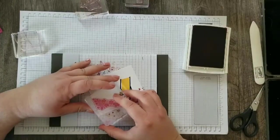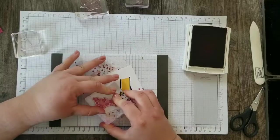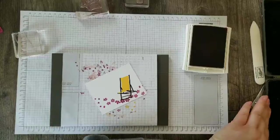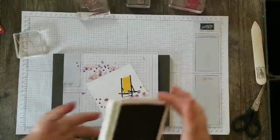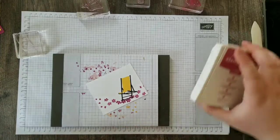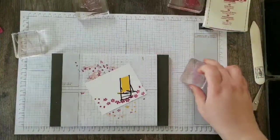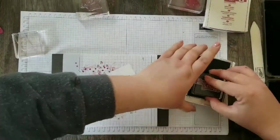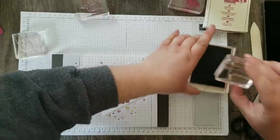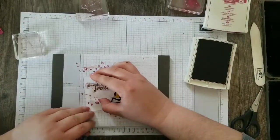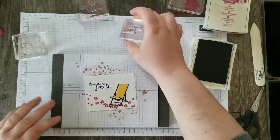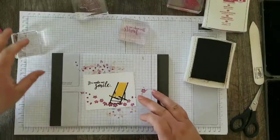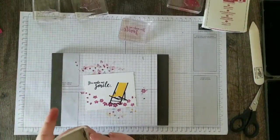So in Berry Burst, I'm going to come in and stamp these flowers along the ground, almost like they are blowing in the breeze on a nice warm spring day. And I will come in with my sentiment next. I'm using the You Make Me Smile sentiment. And I'm going to stamp that in Early Espresso.